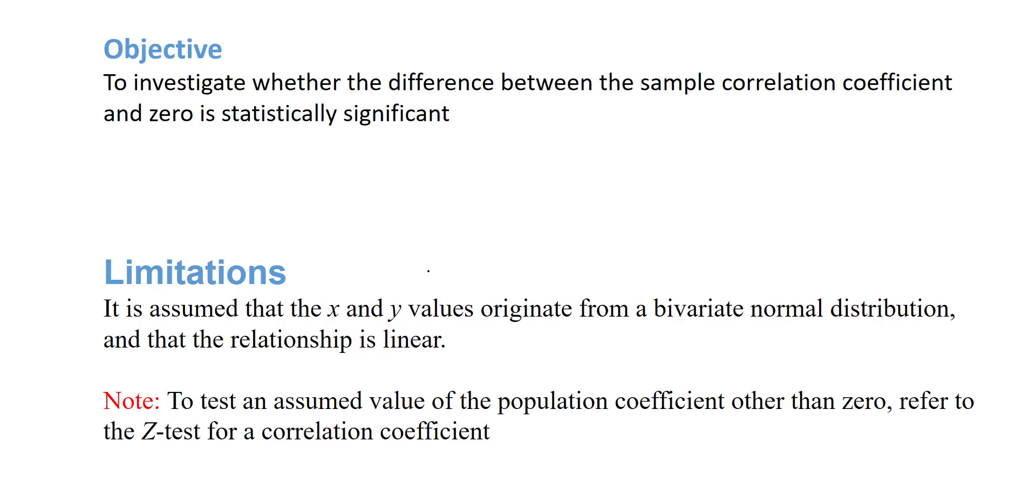The limitations on this test are that it is assumed that the x and y variables originate from a bivariate normal distribution, and that the relationship they have is linear. To test an assumed value of the population coefficient other than zero, we'd have to use the z-test for correlation coefficient, which I'll be doing in another video.